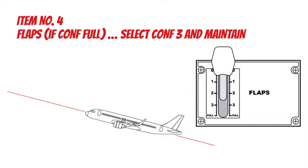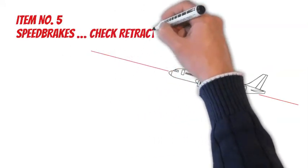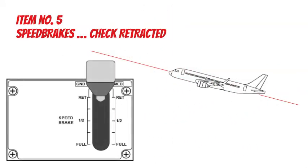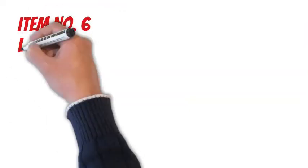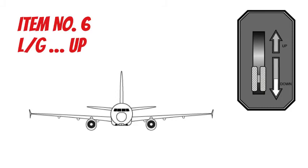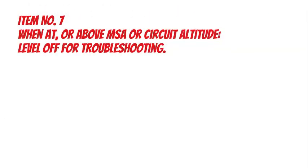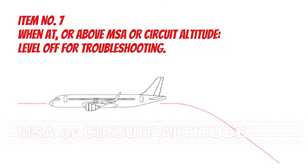Item number 5: Speed brakes — check retracted. Item number 6: Landing gear — up. Item number 7: When at or above minimum safe altitude (MSA) or circuit altitude, level off for troubleshooting.